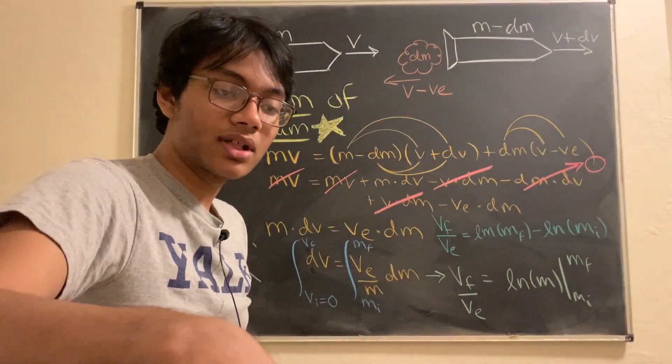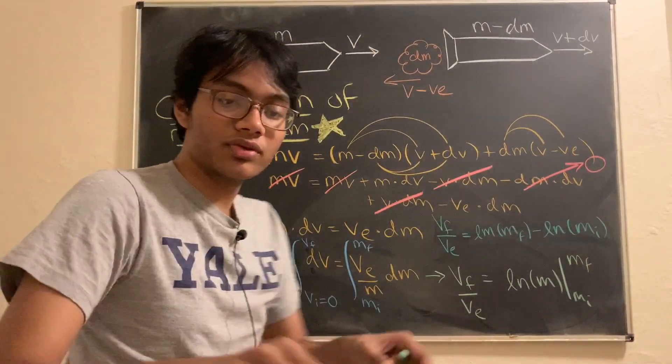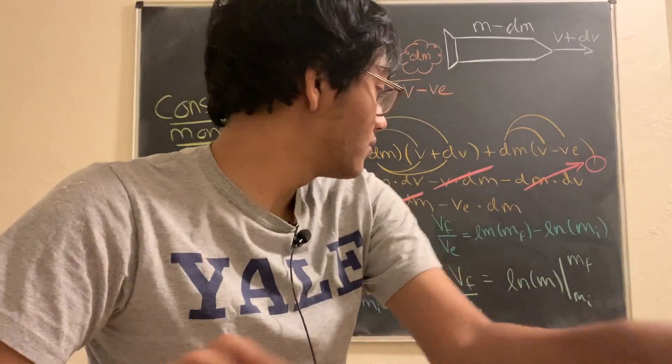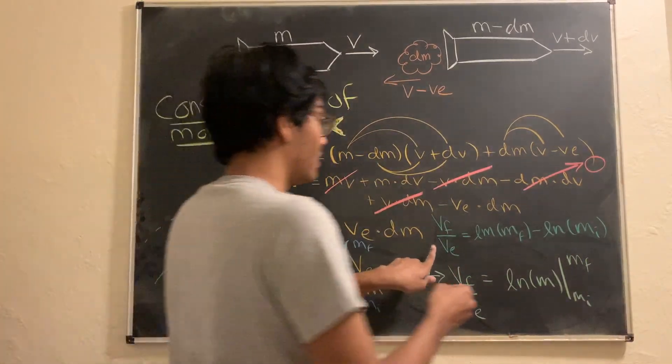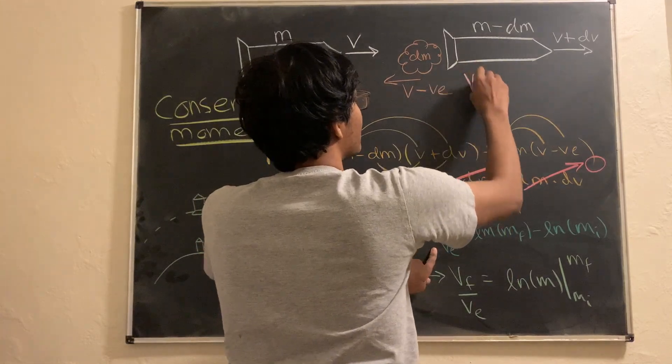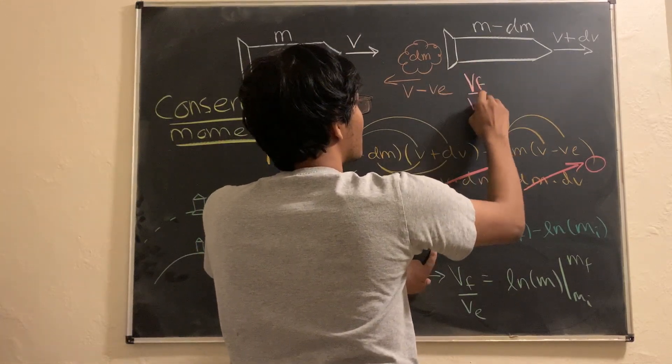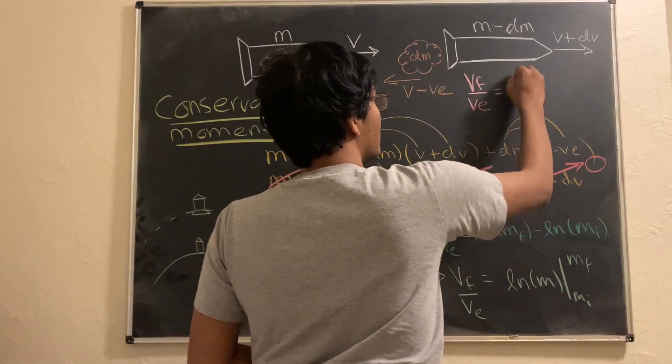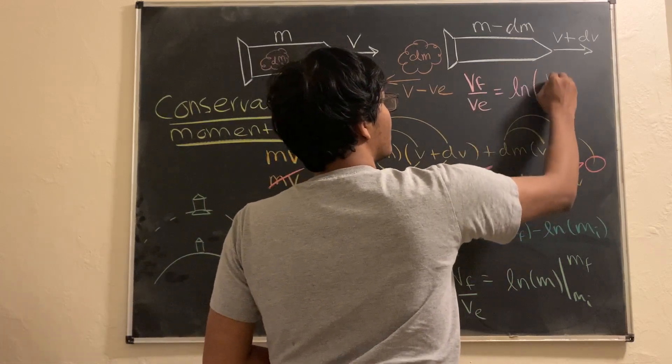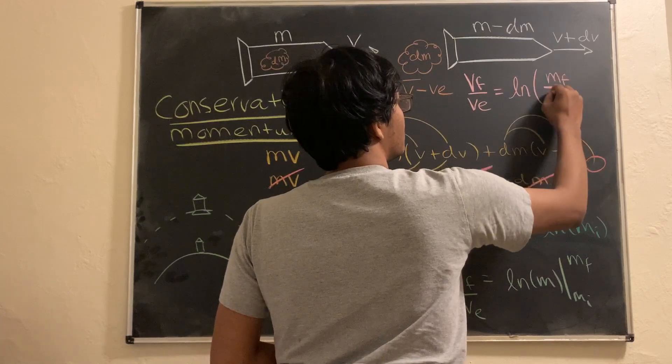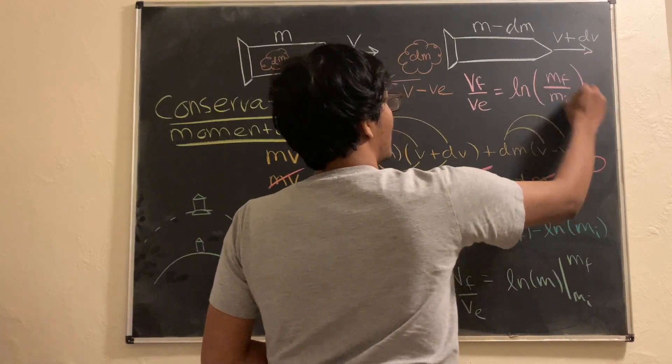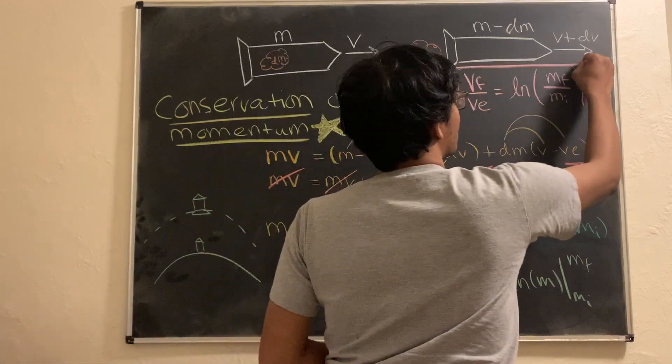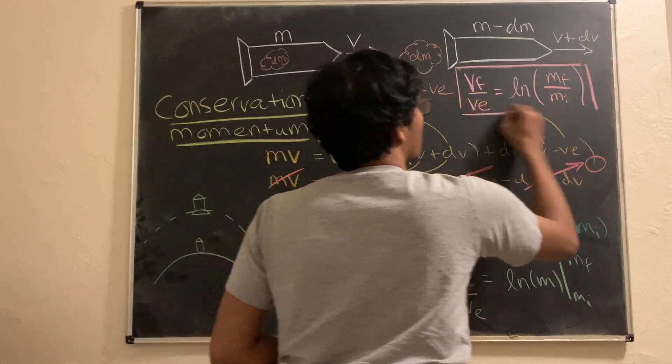And now we can go ahead and simplify that. Let me go ahead and use the color red to signify we're almost there. And so now, what do we have here? We're going to have the ratio of the final velocity to the exhaust velocity is equal to log of the final mass to the initial mass. And that, ladies and gentlemen, is your rocket equation.